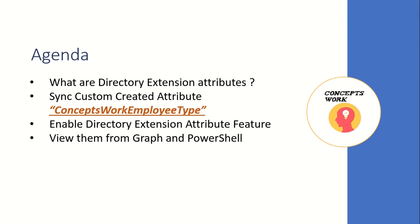For my demo, I have created a custom attribute named Concepts Work Employee Type that I will be syncing to Azure Active Directory. The question is: once these Directory Extension Attributes are synced to Azure Active Directory, whether you can query them with Graph or PowerShell, and how to query them.